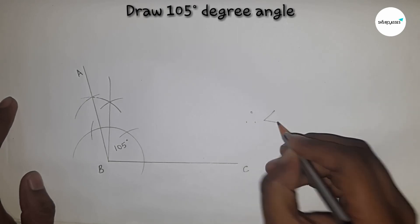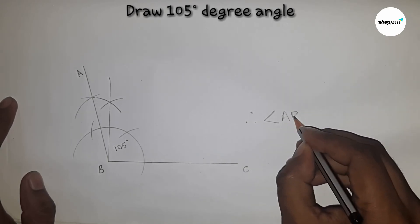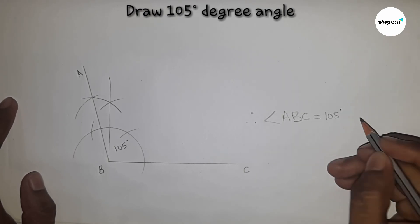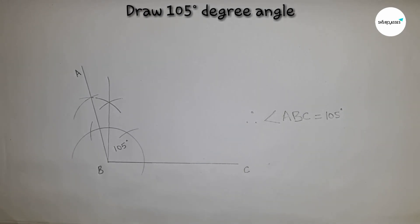Therefore angle ABC equals 105 degrees. Thanks for watching. If this video is helpful then please subscribe, like and comment.